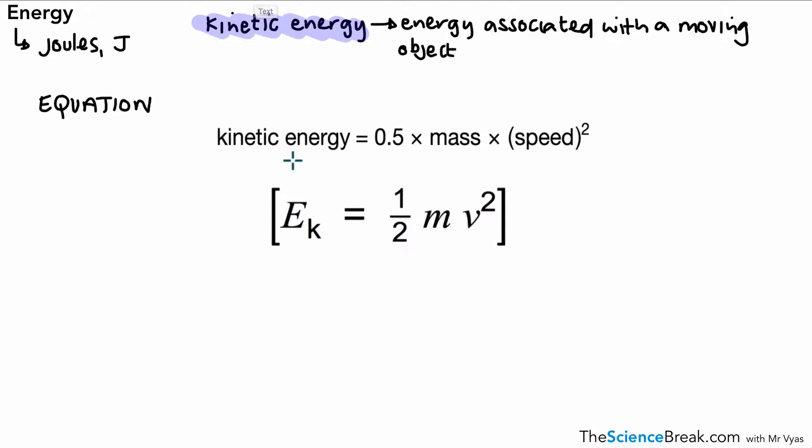Now, we say v squared because sometimes you might see it written as velocity squared. Velocity is speed but in a given direction, but what we're going to use is speed for our calculations today.